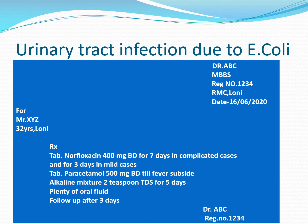We also give tablet paracetamol 500 mg twice daily for fever. Alkaline mixtures are added in UTI therapy because the growth of E. coli is optimum at pH 5 to 6. In UTI infection, urine generally becomes acidic, and E. coli growth can be inhibited at pH below 5.5 and above 7.5.